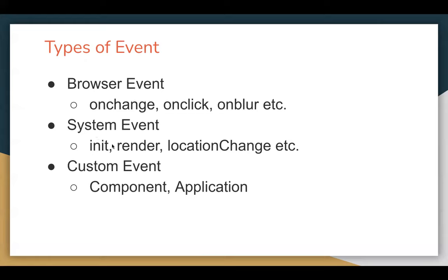Next is system event. For system events, you don't need to use any tag. You just need to register the event in the component file and write the method that will execute when that system event fires. Examples include init, render, locationChange, etc. — and in some examples I used init as well. That is a system event; you don't need to define any markup or tag for it. Next is custom event. In Lightning component with Aura, you can use two custom events: component event and application event. Let's discuss these events one by one in detail.